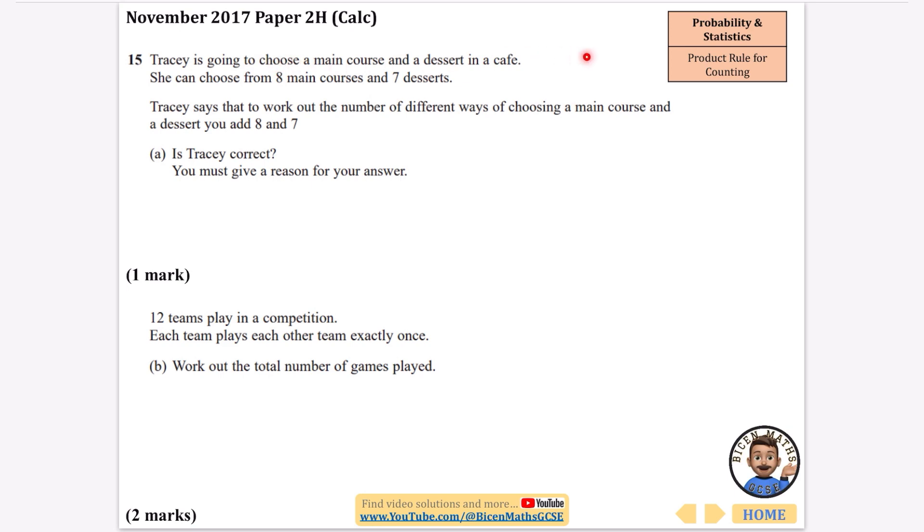This time it says Tracy is going to choose a main course and a dessert in a cafe. She can choose from eight main courses and seven desserts. Tracy says that to work out the number of different ways of choosing a main course and a dessert you add eight and seven. Is Tracy correct? You must give a reason for your answer.